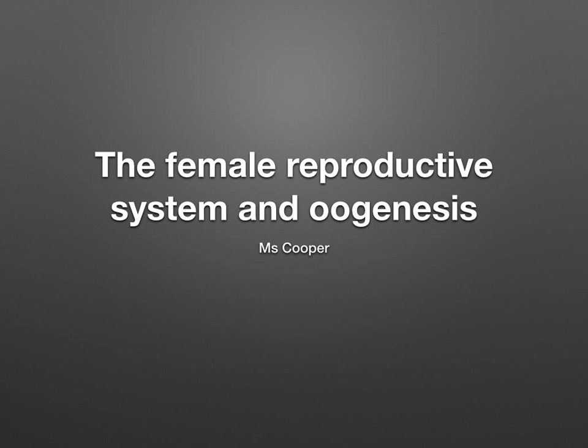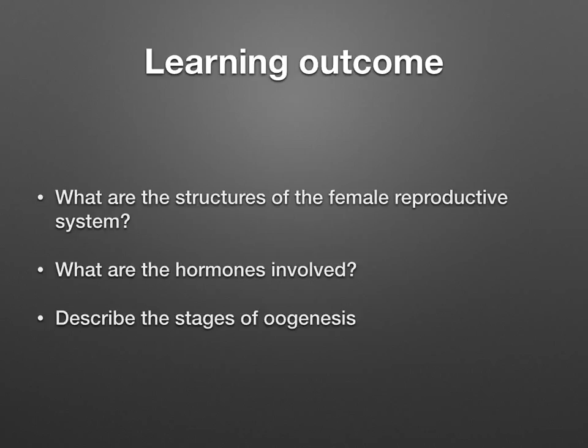In this topic, we're going to discuss the female reproductive system and oogenesis. We'll look at the structures of the female reproductive system, the hormones involved, and then describe the stages of oogenesis.